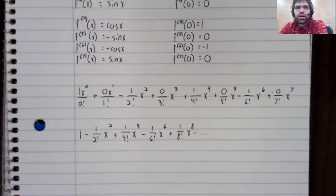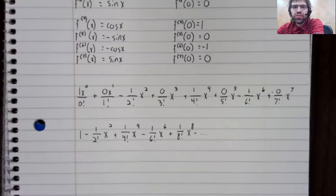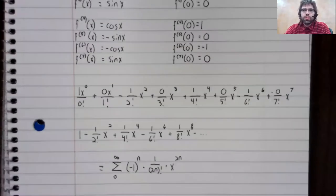And our McClurin series ends up being an alternating series of even powers of x. If we wanted to write this compactly using summation notation, we can do so like this.